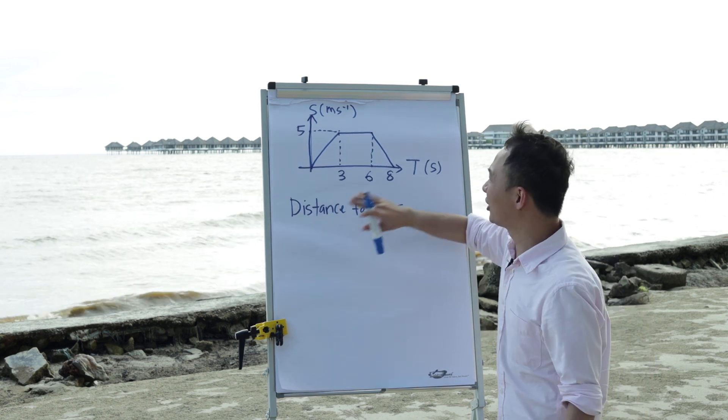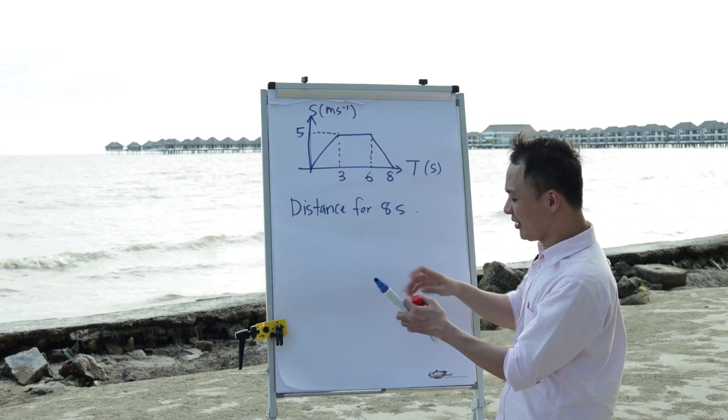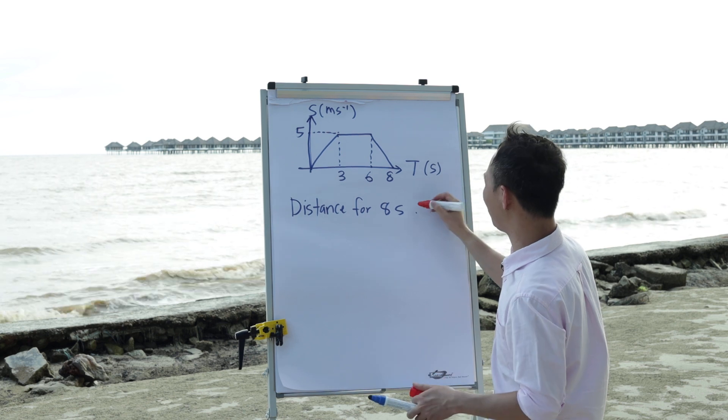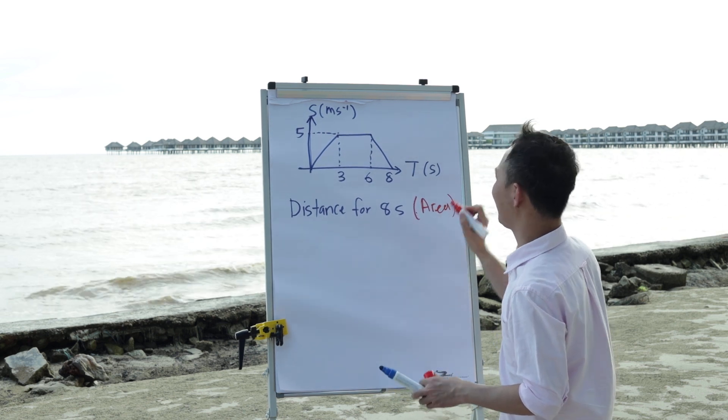So for a speed-time graph, you need to know the distance actually means the area. So just remember for speed-time graph, the distance means area.